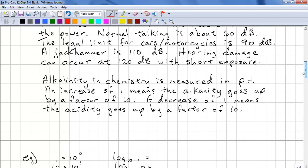Another place where logarithms are used is alkalinity for chemistry when we measure pH. An increase of 1 in pH means that the alkalinity goes up by a factor of 10. A decrease of 1 means the acidity goes up by a factor of 10.